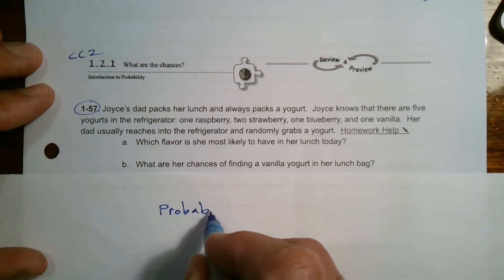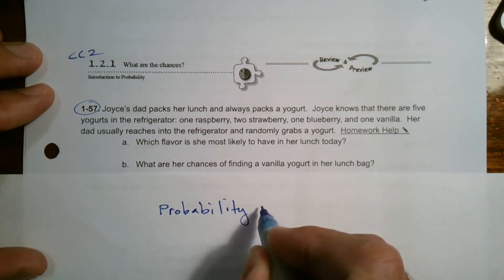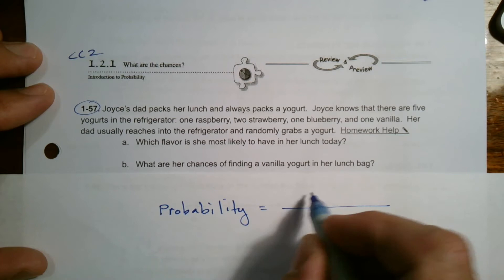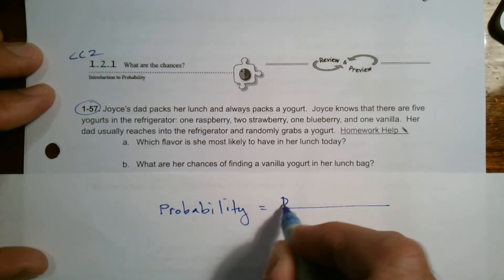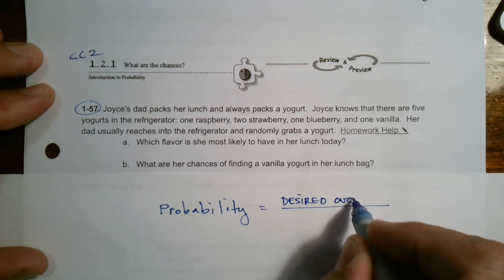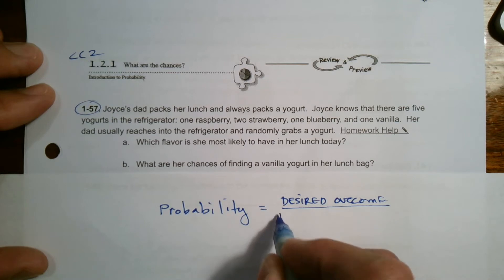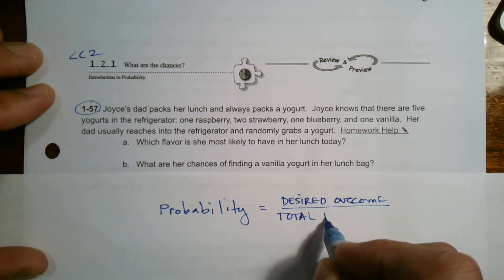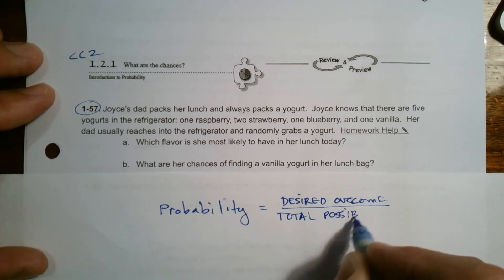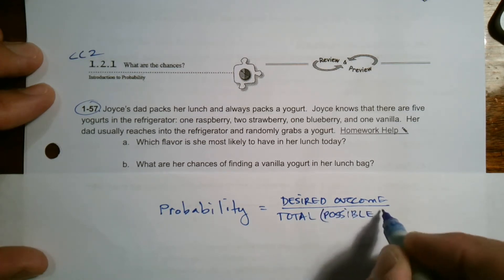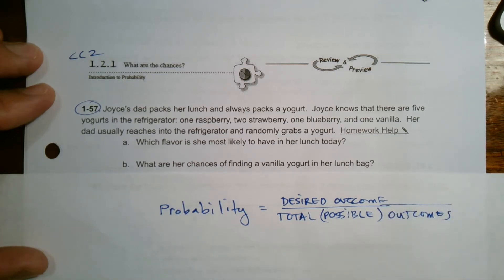Probability is always determined by the desired outcome over the total outcomes. I'll write total possible outcomes, because that's really what we're looking at. That's the denominator.